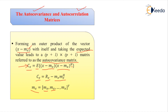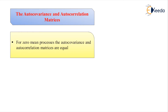If the random process is a zero mean random process, meaning m_x = 0, then the auto covariance matrix and the auto correlation matrix are equal. We can state that for zero mean processes, the auto covariance and auto correlation matrices are the same.